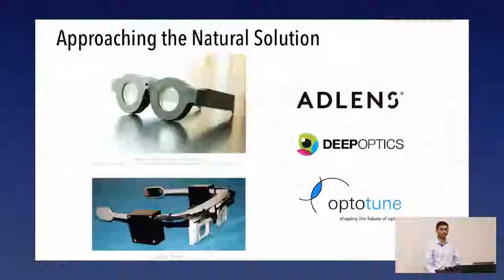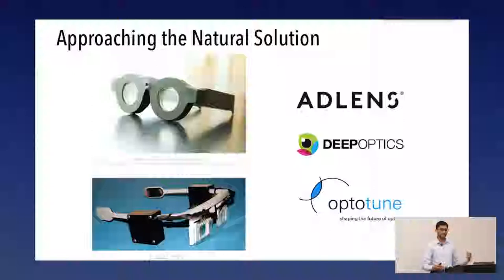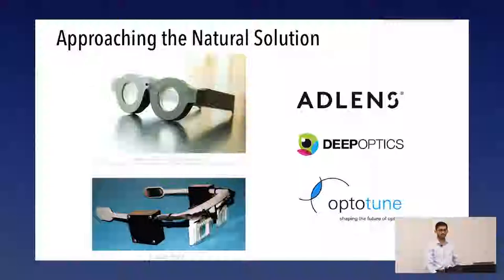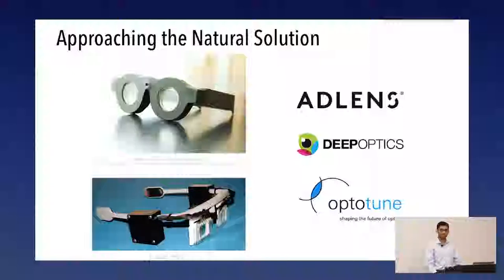There are a couple of different research projects and companies working on automatic correction for presbyopia. At this point, the companies either have products in development or there's no automatic control. As far as research goes, the most automatic control we have is a depth sensor that looks straight ahead of the user's head, so whatever is directly in their center of vision is focused. If they turn their gaze, nothing changes — it ends up being head-tracked refocusing rather than eye-tracked refocusing.